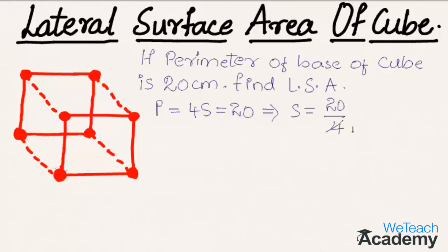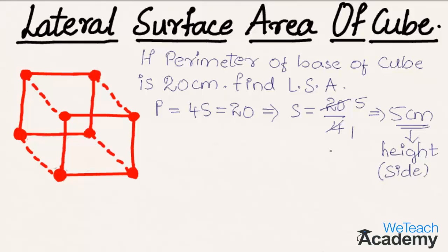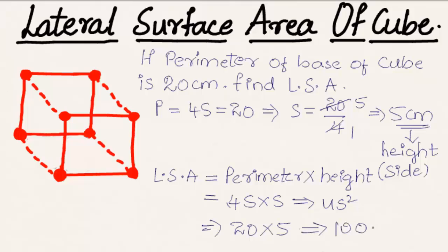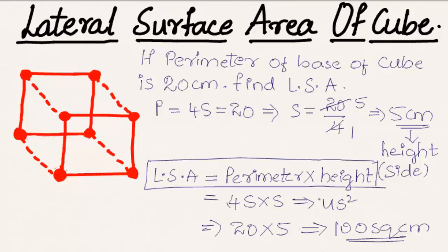Simplifying, 20 ÷ 4 = 5, so s = 5 centimeters. The lateral surface area can also be calculated as perimeter × height, which is 4s × s = 4s². Substituting the values: 20 × 5 = 100 square centimeters. Hence, the lateral surface area of the cube is 100 square centimeters, confirming the formula: lateral surface area = perimeter × height = 4s² square units.